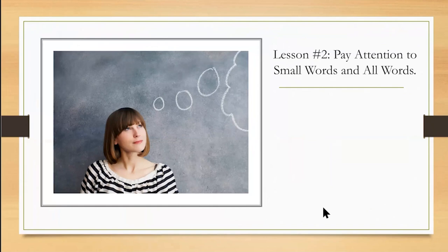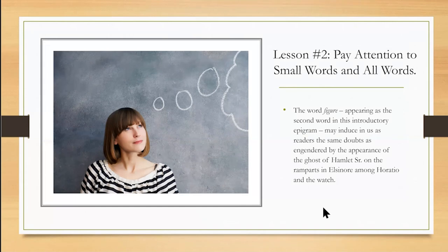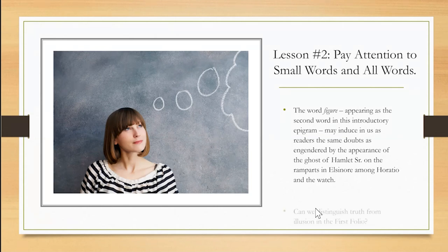This is our second lesson after context: pay attention to small words and all words. The word figure, appearing as the second word in this introductory epigram — and the second word in the Shakespeare First Folio — should really induce in us as readers the same doubts as engendered by the appearance of the ghost in Hamlet Senior on the ramparts in Elsinore. Is the ghost real? Can we distinguish truth from illusion in the First Folio?